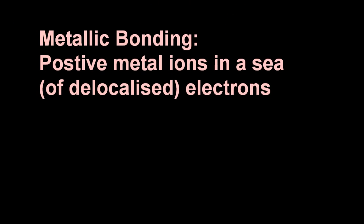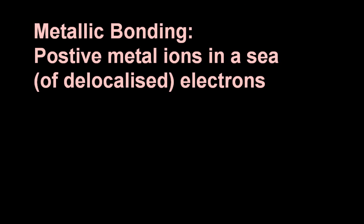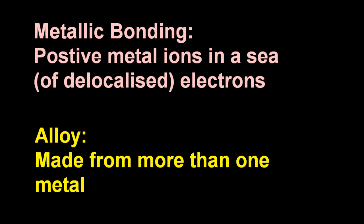So let's start with the definition. Metallic bonding: that is positive metal ions in a sea of electrons. And an alloy, well that's made from more than one metal, with the exception of steel that's made from iron and the non-metal carbon, and that's quite a common alloy.